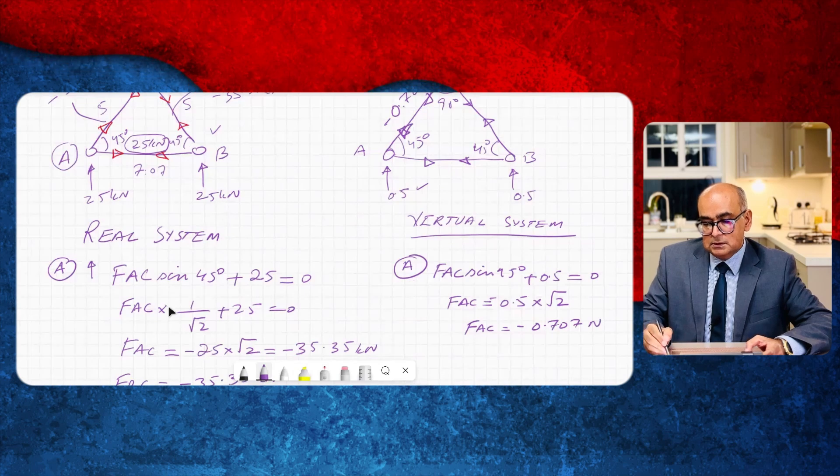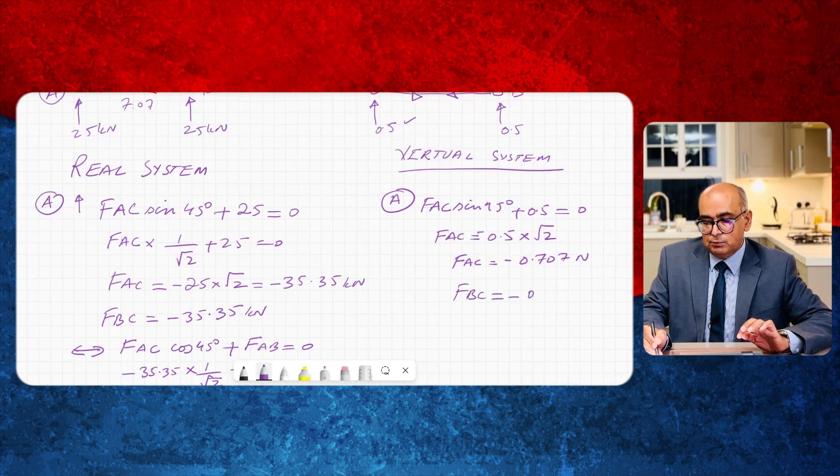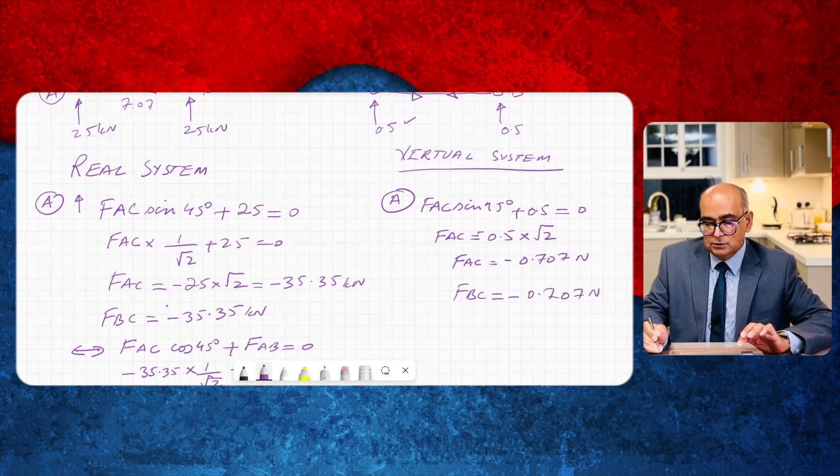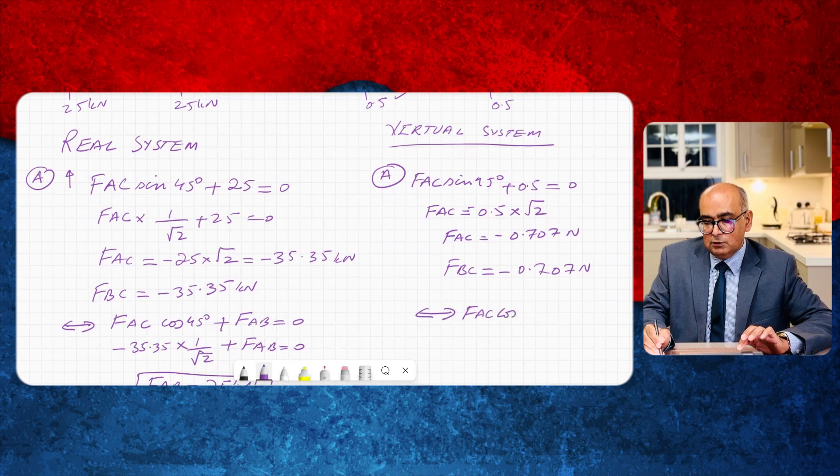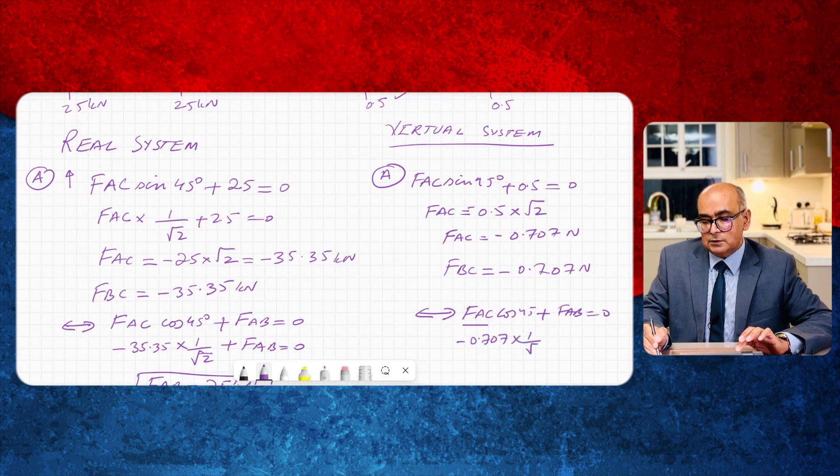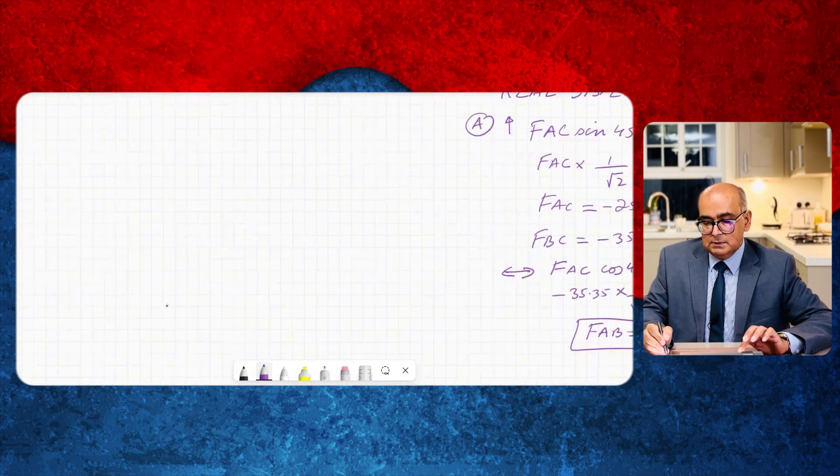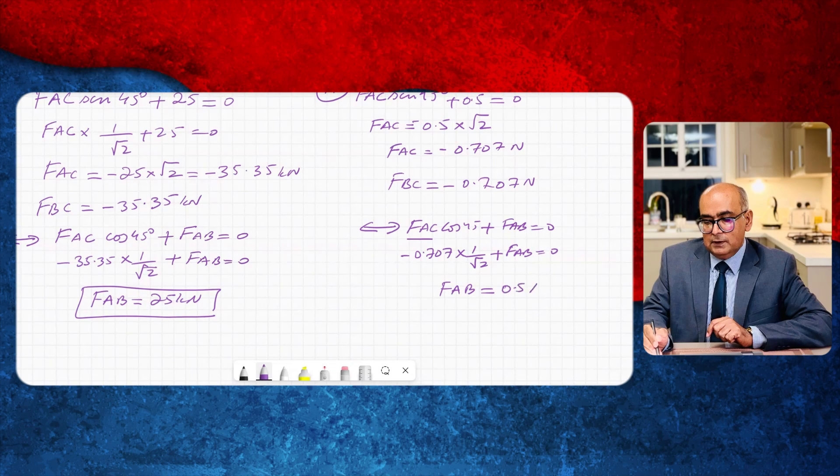This is in newtons and in the same way FBC will have the same value minus 0.707 newtons. If I say summation of horizontal forces equal to zero then I will say FAC cos 45 plus FAB is equal to zero. In this virtual system FAC is minus 0.707 times cos 45 is 1 over under root 2 plus FAB I want to find out is equal to zero and if you simplify this you will get value of FAB as 0.5 newtons.